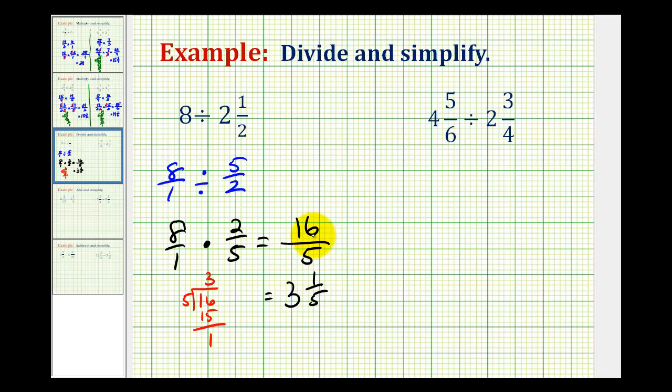So if you're allowed to express your answer as a fraction, or improper fraction, we would have 16 fifths. If it asks for a mixed number, it would be 3 and 1 fifth.